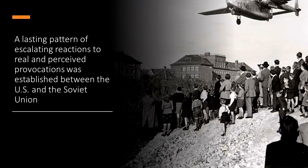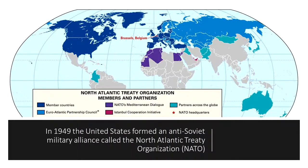The Soviets blockaded the roads on the Soviet part of occupied Germany, forcing the U.S. to transport things by air to Berlin. The blockade lasted 324 days. In 1949, the United States formed an anti-Soviet military alliance called the North Atlantic Treaty Organization, NATO. Stalin's response was creating the Warsaw Pact in 1955, a formal agreement of several countries allied to the Soviet Union.